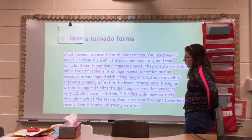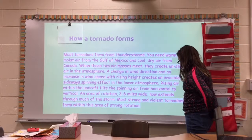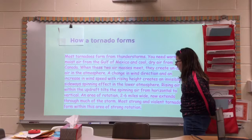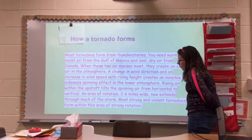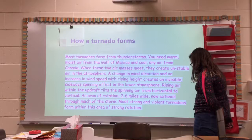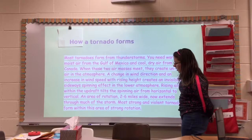The spinning air rotates from horizontal to vertical, in an area of rotation up to 6 miles wide through much of the storm. Most strong and violent tornadoes form within this area of strong rotation.